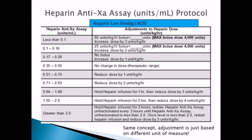On this last slide, I wanted to mention that while the examples we worked and the practice problem worksheets all focus on the PTT level, some facilities have begun using the factor Xa fractionated level instead of the PTT. The protocol works the same way — the left-hand column shows what the result would be and the right-hand column tells you what to do in response. The adjustment is just based on a different unit of measure, but the concept is identical.